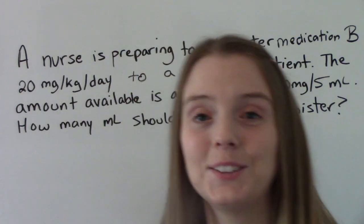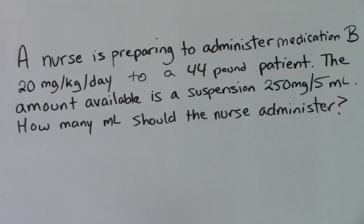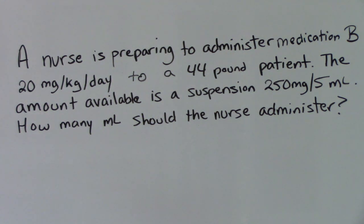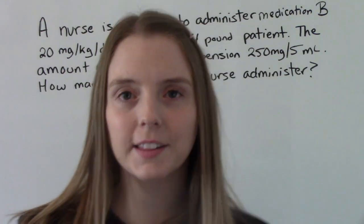Last one — this one is a little more challenging. A nurse is preparing to administer medication B, 20 mg per kg per day, to a 44-pound patient. The amount available is a suspension, 250 mg per 5 mLs. How many mLs should the nurse administer? Let's work this one out.